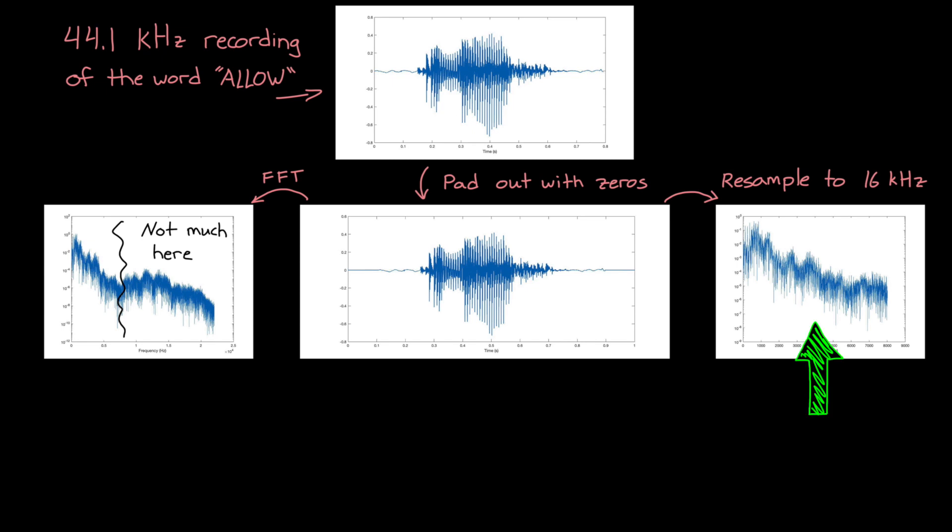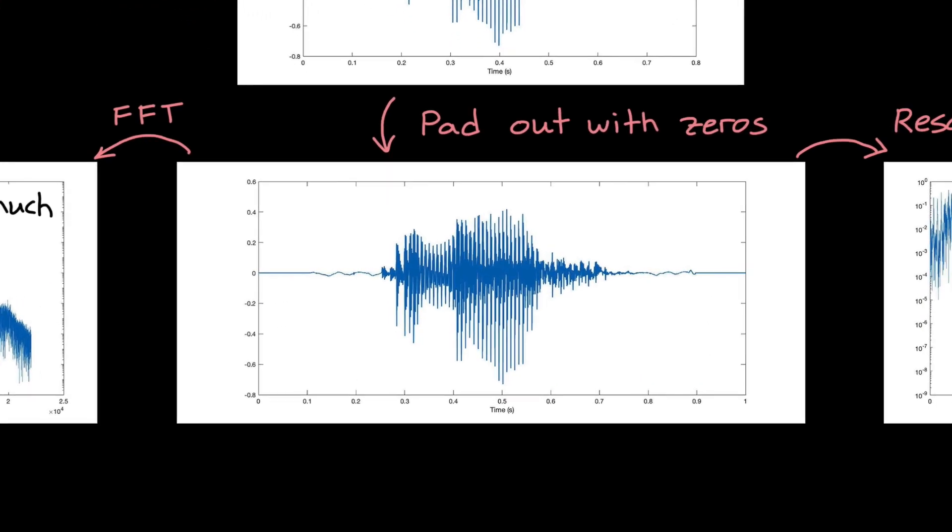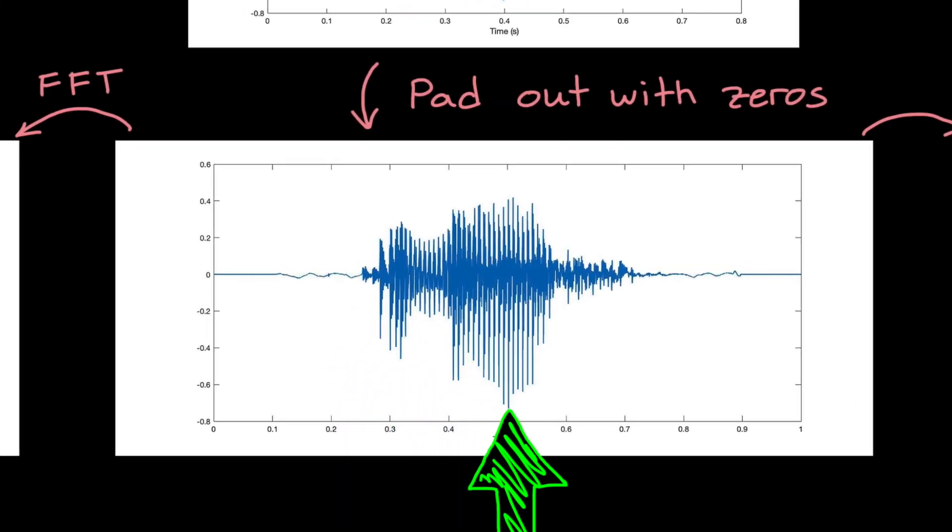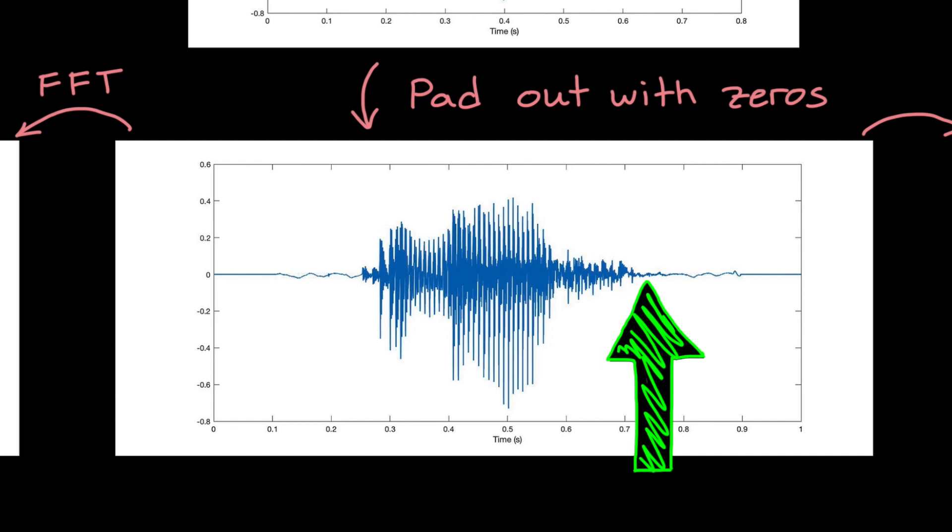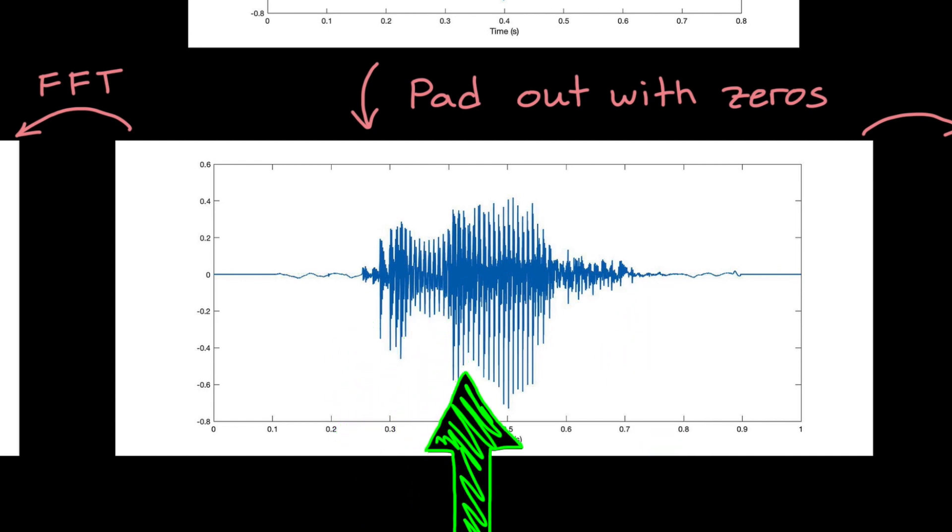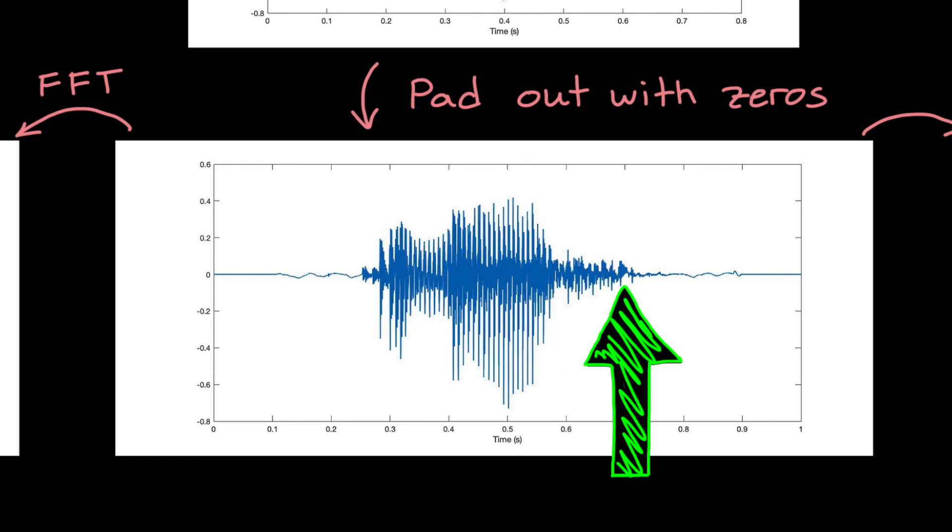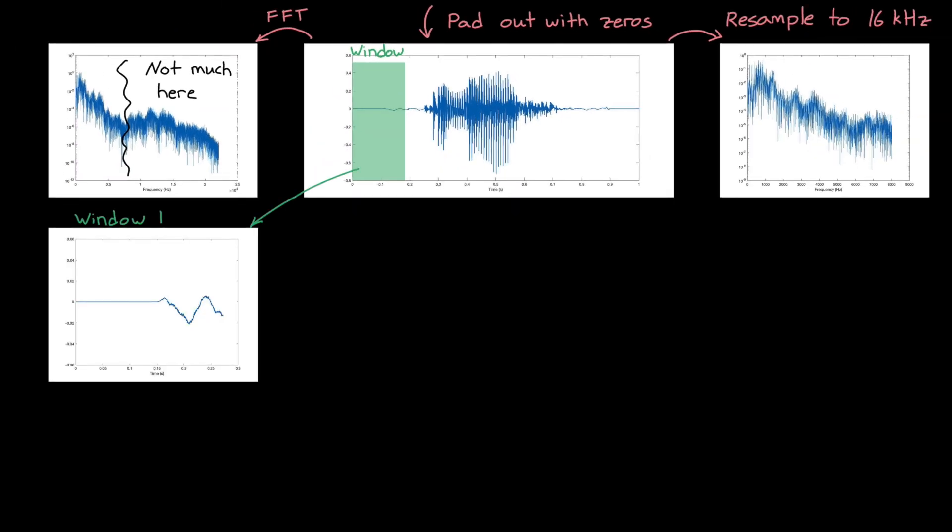Alright, so this is the frequency content for the entire signal, which isn't quite what we want. As we speak, the frequency content changes based on the sounds and syllables we are saying. And we want to be able to pick out those individual sounds and words. So we need to see how the frequency content changes over time. And we can do that with a short time Fourier transform. We start by selecting a window size that is smaller than the full signal, and then running an FFT on just that subset of data. I'm choosing a window that's a little over 180ms, and you can see what that bit of audio looks like here.